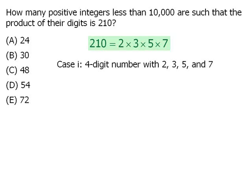Case one is that we have a four digit number consisting of a 2, a 3, a 5, and a 7. In how many ways can we arrange these four digits to create different numbers? We can do this in four factorial ways.